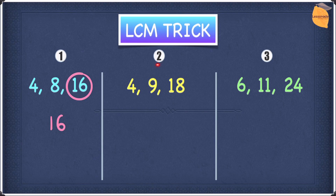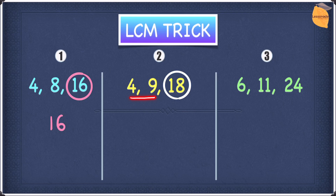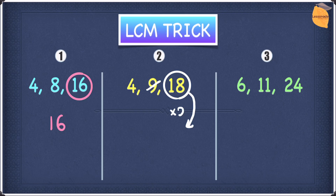Let's have a look at the second LCM trick, and the example is 4, 9, and 18. Once again, find the highest number out of these three, and it is 18. Now we're going to see whether 18 is divisible by 4 and 9. We know that 9 goes into 18 two times, so we can cross off the 9, but 4 does not go into 18. So in this case, we'll have to find the next highest multiple of 18. Let's do 18 times 2, which gives us 36. 4 goes into 36 nine times, so our LCM for this question is 36.